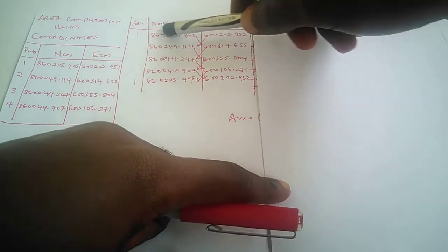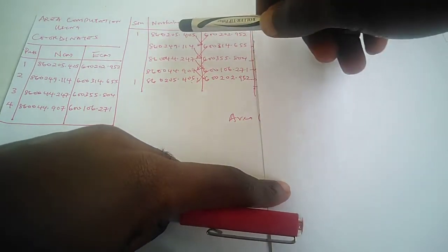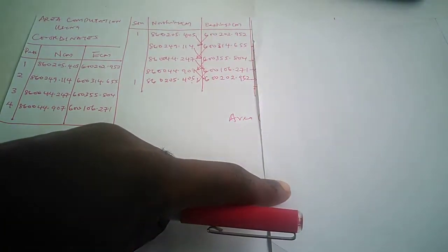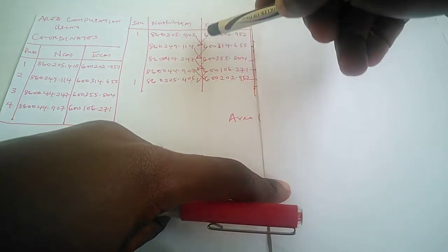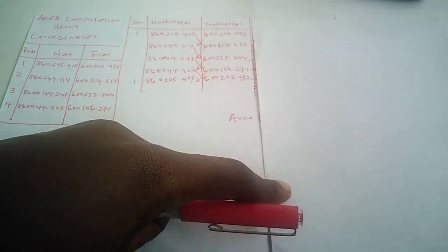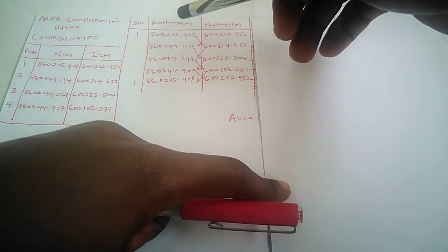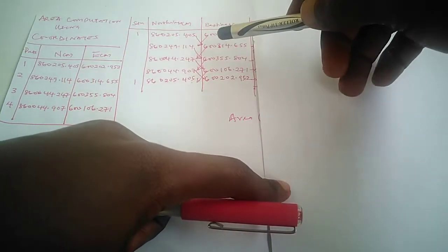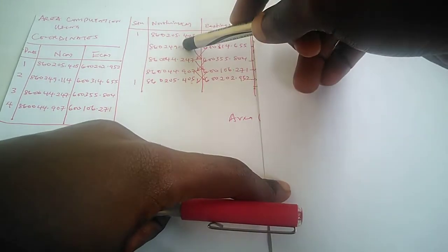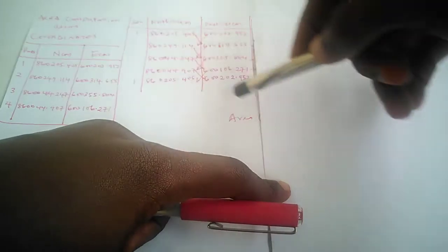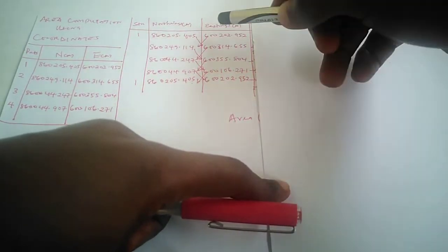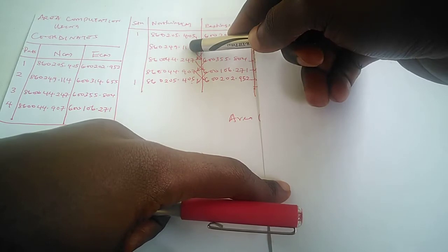For this particular cross coordinate method, we are going to draw this simple table. Using this method, sometimes it is called cross coordinate because you see it's crossing a line like this. The idea is very simple: your first northing will multiply what your second easting.